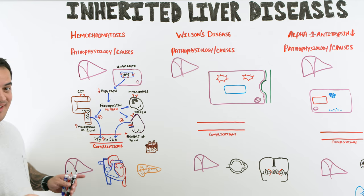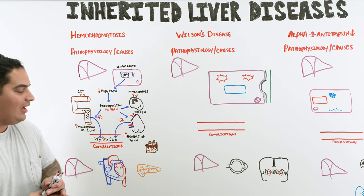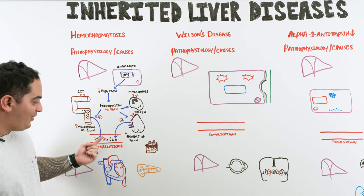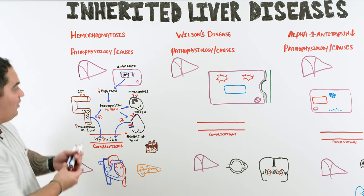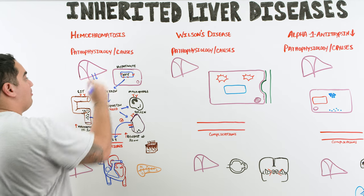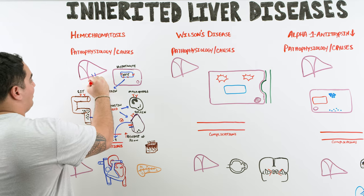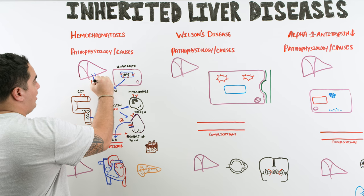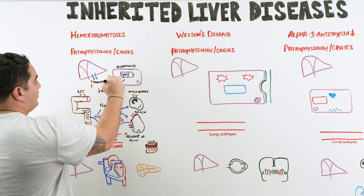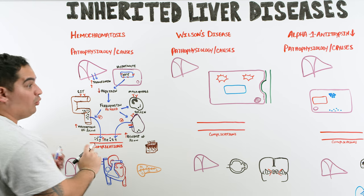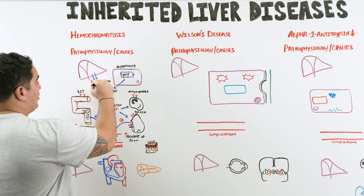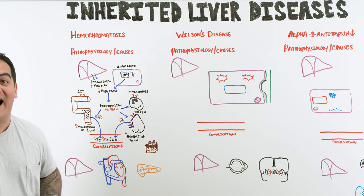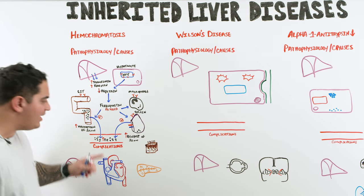Now there's a lot of iron within the bloodstream. The problem is that iron then deposits in a bunch of different organs. Your liver has to compensate — it tries to increase different proteins to bind up the free circulating iron. It makes a lot of ferritin and transferrin to compensate, and you'll see these as very helpful lab values.